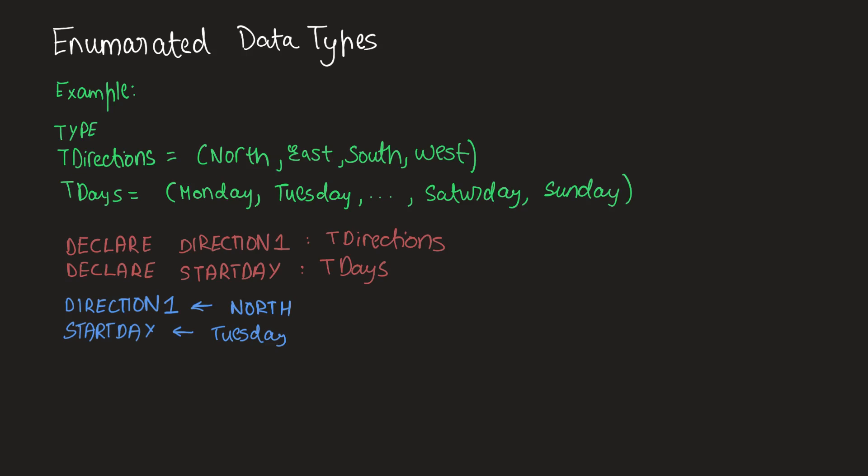Here's an example — take some time and go through this code. In here, we're defining two data types: T-directions and T-days. T-directions has four values — north, east, south, west — and T-days has all the days of the week. Next we are declaring two variables and giving them their data types, which are T-directions and T-days. The identifiers direction-one and start-day are then given their values, which in this case are north and Tuesday. It is very important to remember that first we have to define the data type, then the variables have to be assigned the data types, after which you can give them their values.